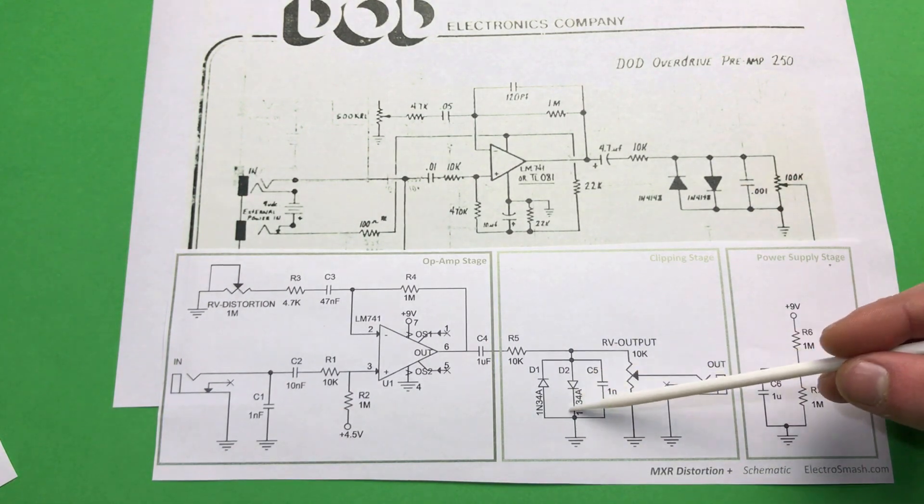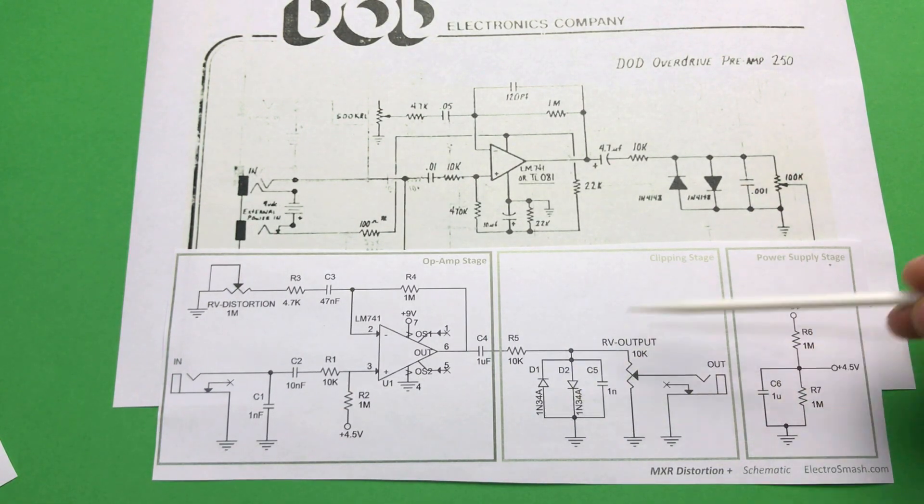Next, in this case we will use hard clipping diodes to reduce our headroom. Reducing it will clip our signal and we will hear more distortion.